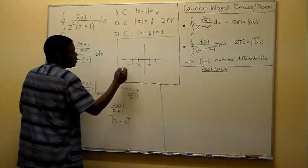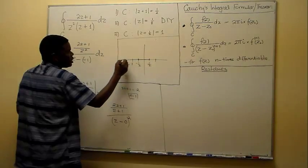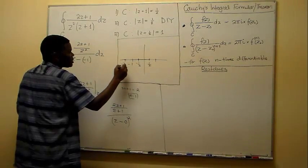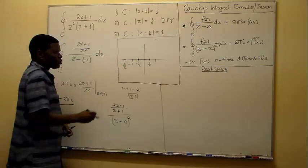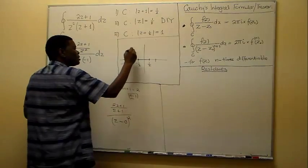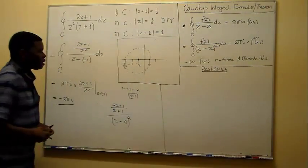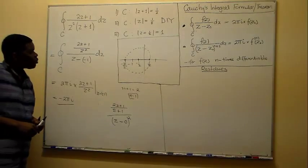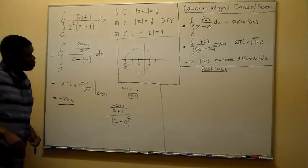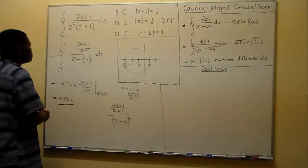We're told that this third circle has radius 1. From the center at minus one-half, one unit to the right reaches plus one-half, and one unit to the left reaches minus three-halves. So our circle runs roughly this way, and in this case it's going to include the two poles.